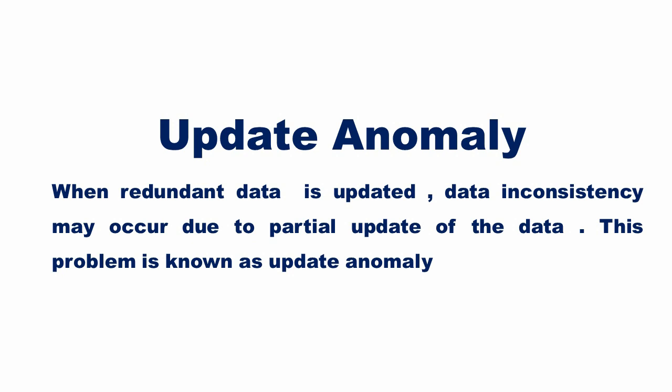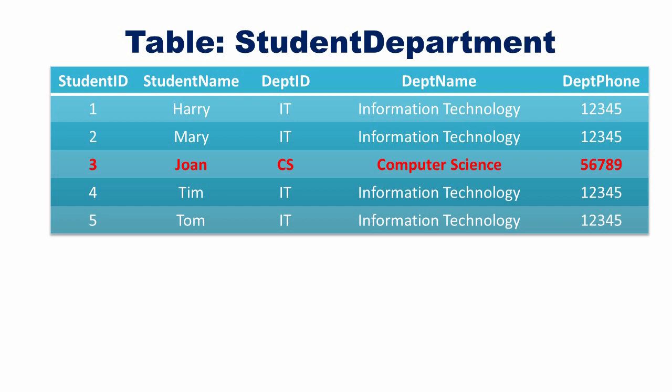This leads to data inconsistency. When redundant data is updated, data inconsistency may occur due to partial update of the data. This problem is known as update anomaly.